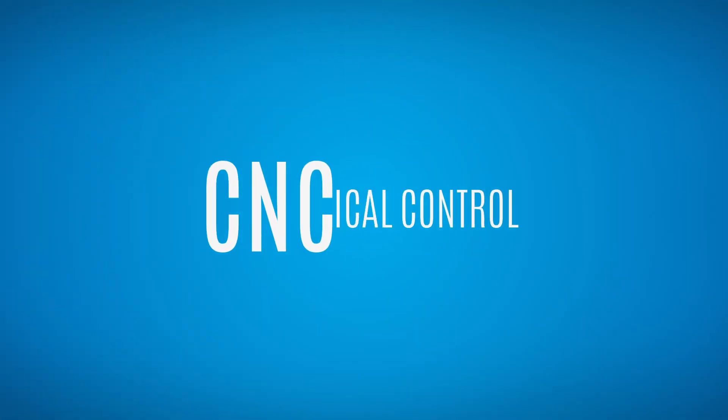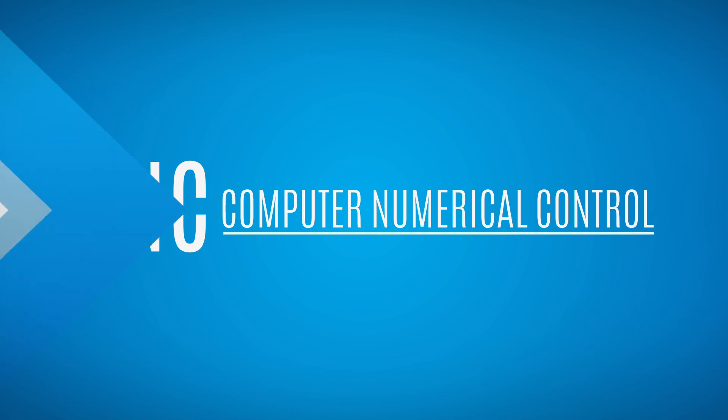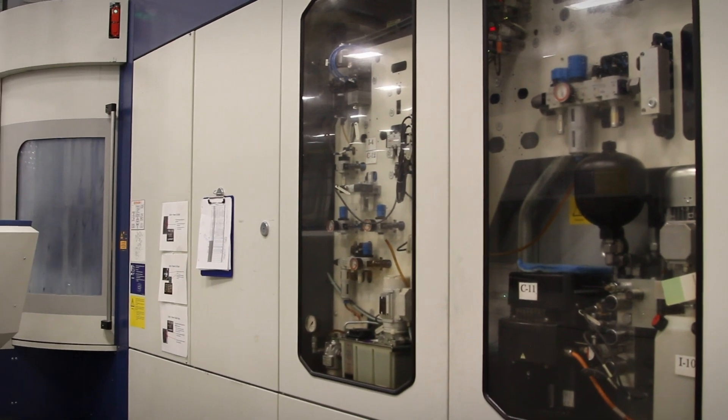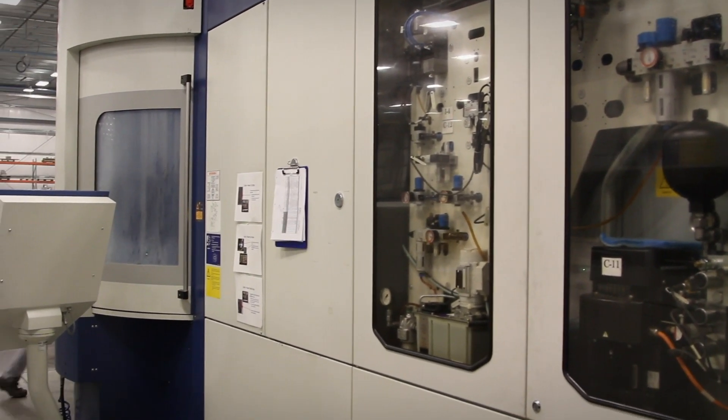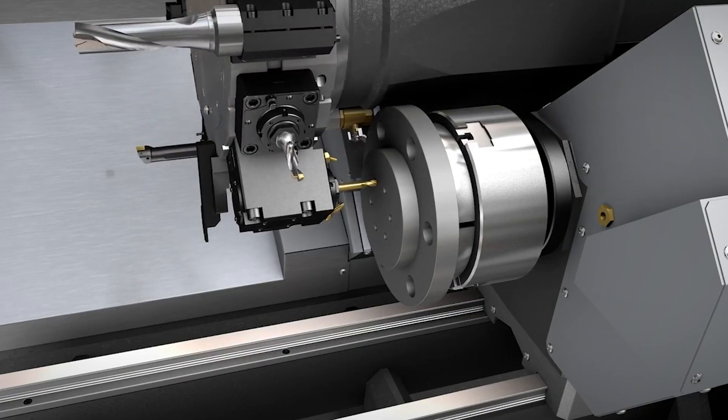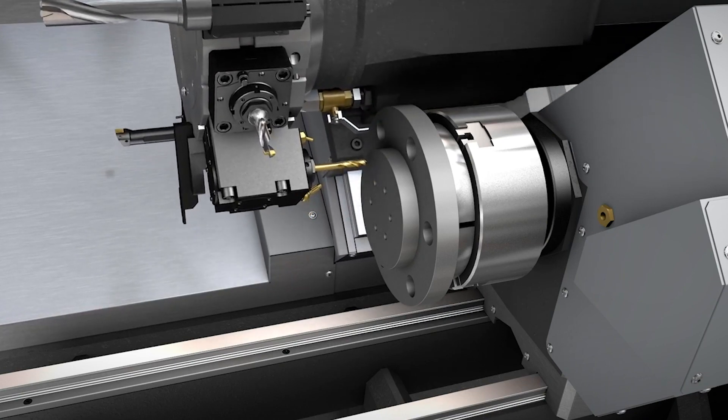CNC stands for Computer Numerical Control. CNC machining is a fully automated manufacturing process in which pre-programmed computer software dictates the movement of factory tools and other machinery. Because of CNC machining, three-dimensional cutting tasks can be completed in a single set of prompts.